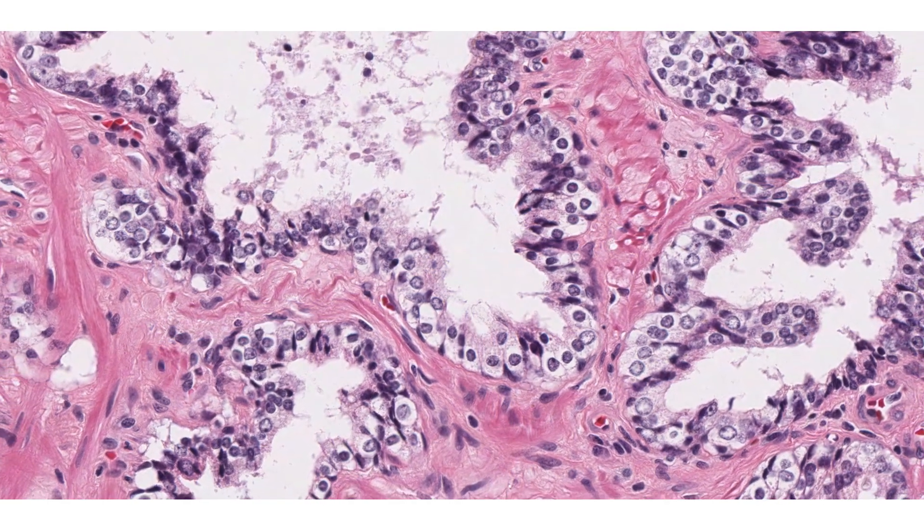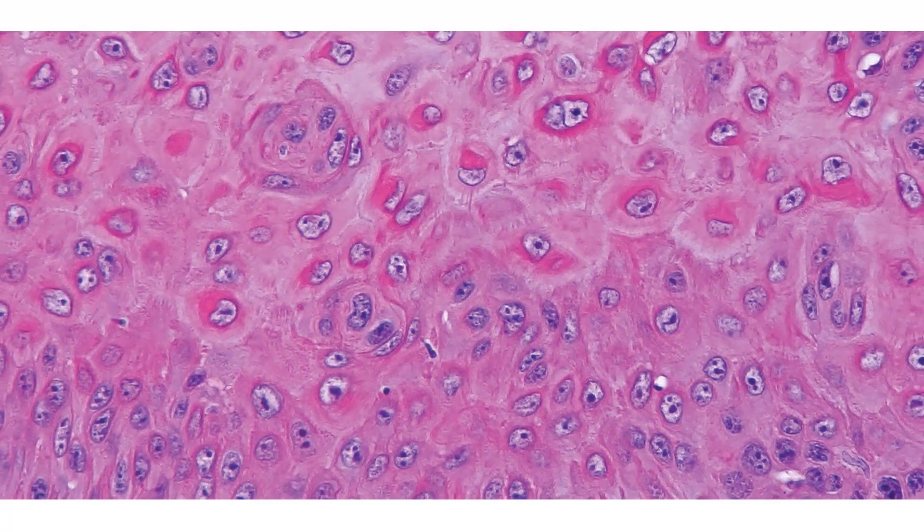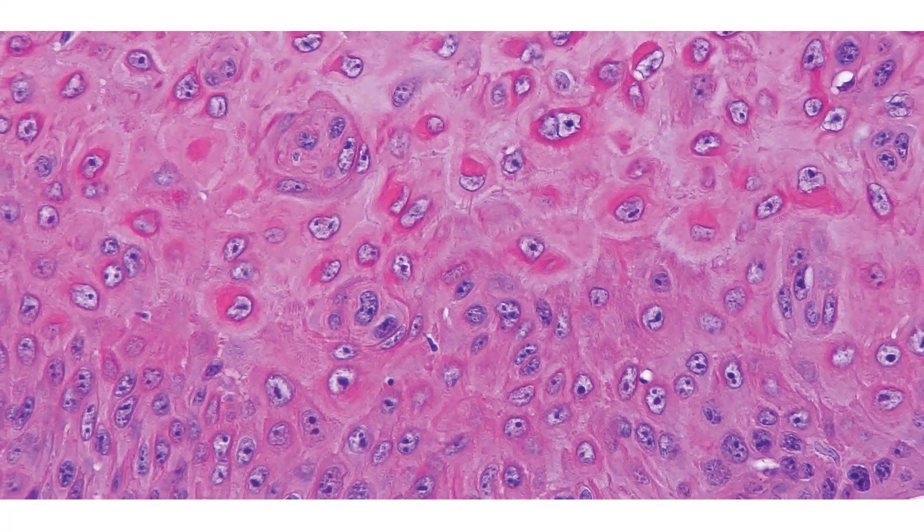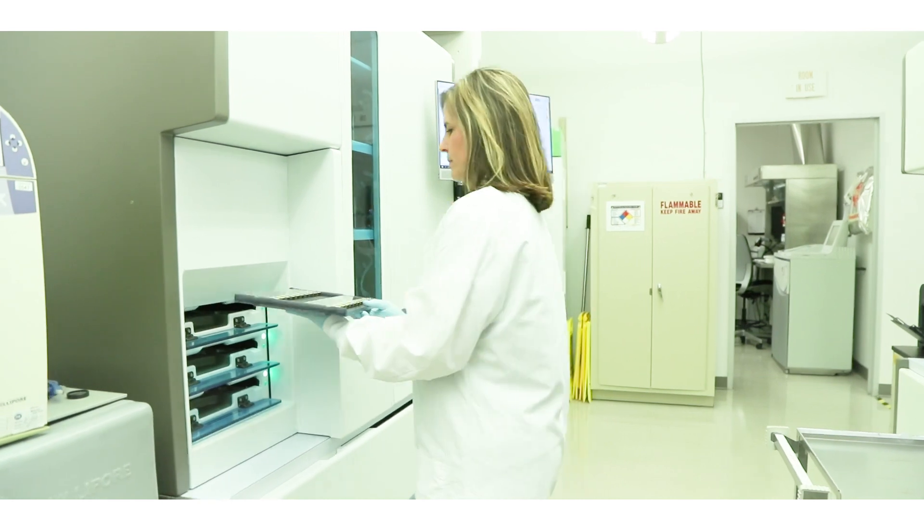Then we'll run what's called an H&E at the beginning and the middle. An H&E is a special type of stain that allows our pathologists to evaluate the material that's there.